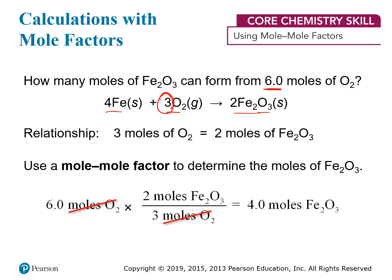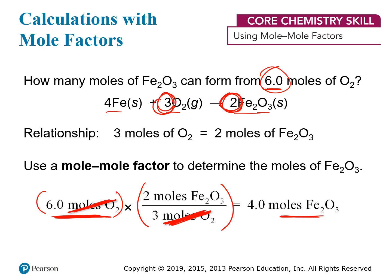From the equation, three moles of oxygen produces two moles of iron three oxide — a three-to-two molar ratio. Starting with six moles of oxygen, we multiply by a conversion factor where moles of oxygen goes in the denominator to cancel, and moles of iron oxide goes in the numerator — the quantity we want. Filling in the numbers: two moles of iron oxide over three moles of oxygen. Taking six moles of oxygen times two-thirds gives us four moles of iron oxide.